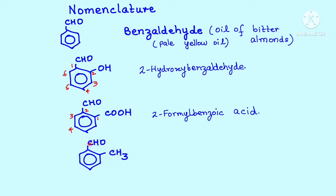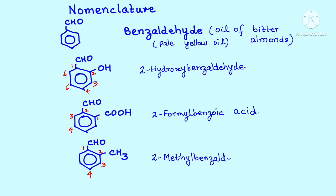Try the next one. CH3 alkyl groups — do they get preference over CHO, or is it the other way around? Of course, CHO gets preference. So one, two, three, and so on, and we have the name of this compound where the methyl group comes as a prefix: 2-methyl, and then the rest of the compound C6H5CHO gives us 2-methylbenzaldehyde. You can practice a few more compounds to get a firm understanding of the nomenclature of aldehydes.